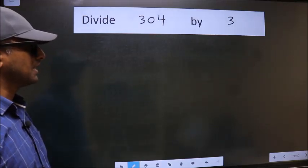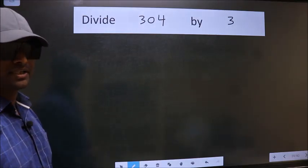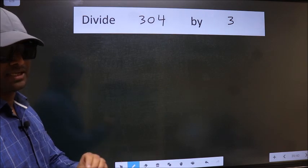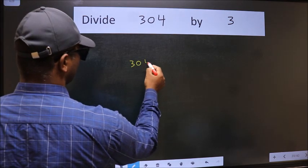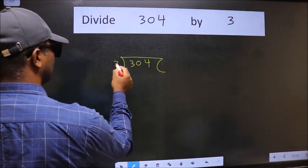Divide 304 by 3. To do this division we should frame it in this way. 304 and 3 here.